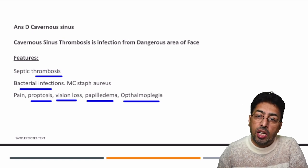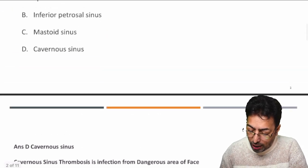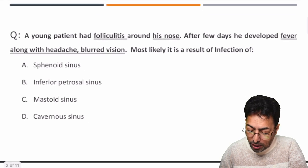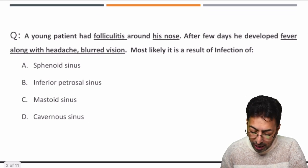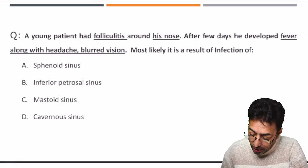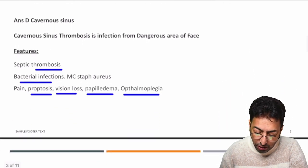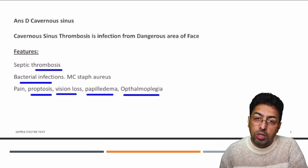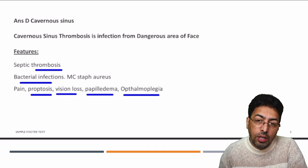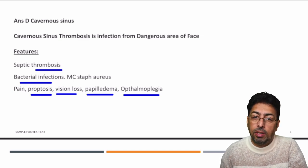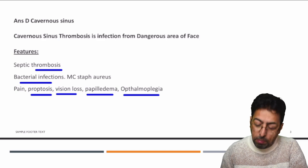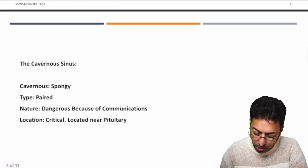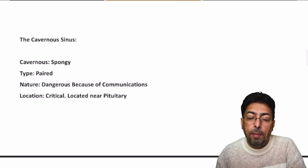In this question, the symptoms given are fever, headache, and blurred vision. However, patients with cavernous sinus thrombosis can also present with proptosis, total vision loss, papilledema, and ophthalmoplegia. The examiner may give any subset of these symptoms, so be aware of the wide and diverse range of symptomatology associated with this condition.